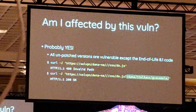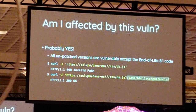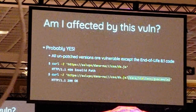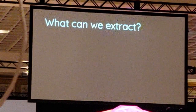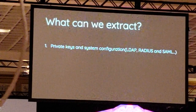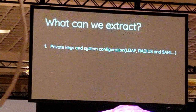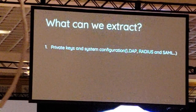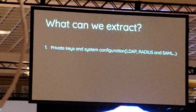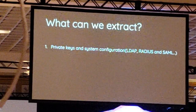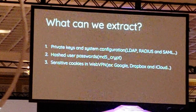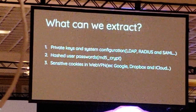Here is the payload for you to check your SSL VPN. When there is a special token at the end of the URL, the path validation becomes loose. What can we get from this? We can get numerous useful pieces of information, such as the server secret key to decrypt the SSL VPN connection. We can also get important configurations such as the RADIUS and LDAP passwords. And all users' password cache and sensitive cookies cached in the web VPN — like Google, Dropbox, and iPhone.